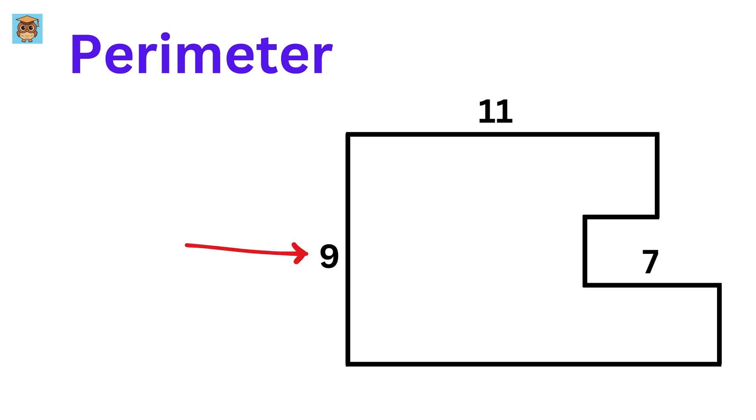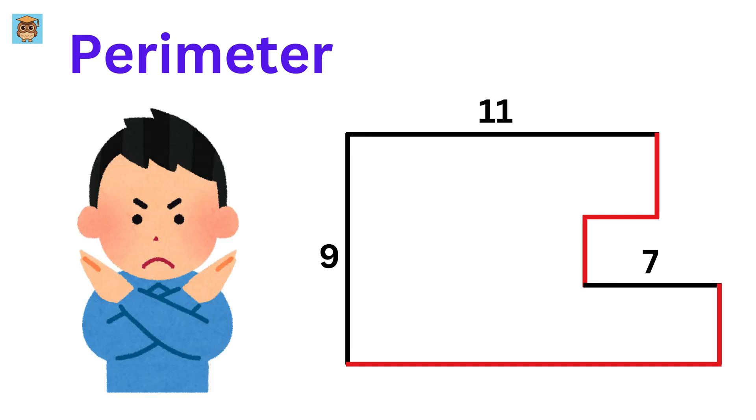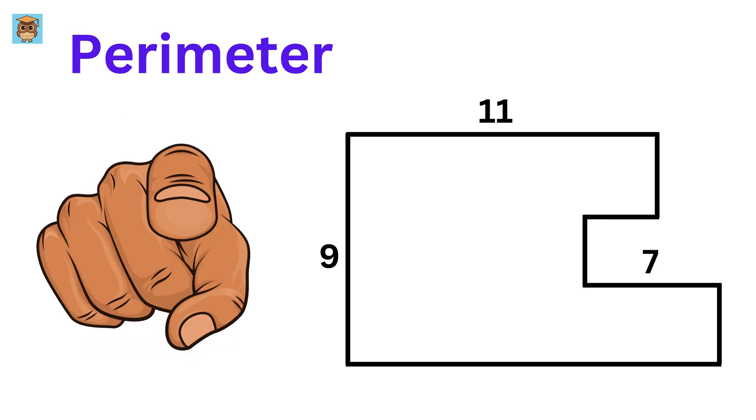This vertical length is 9 units, and this piece is 11 units long, whereas this side is of length 7 units. Also, all of these angles are right angles. Now, for the rest of the five sides, they have not given you any information. So, can you find its perimeter?